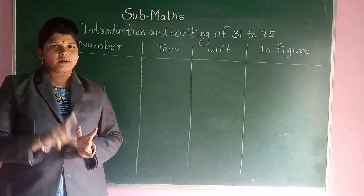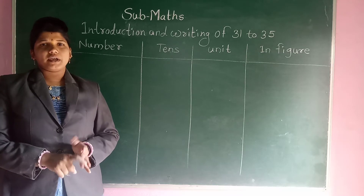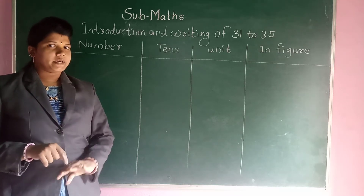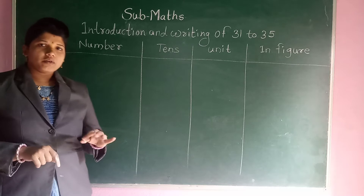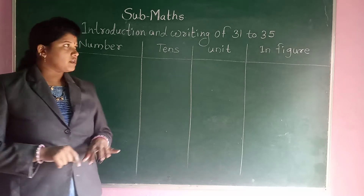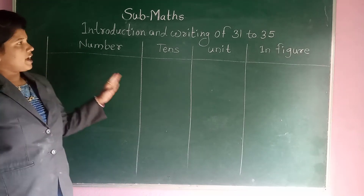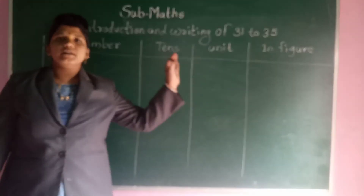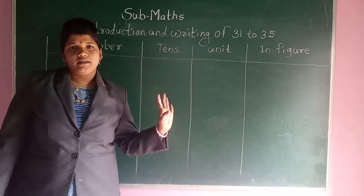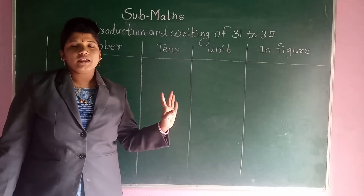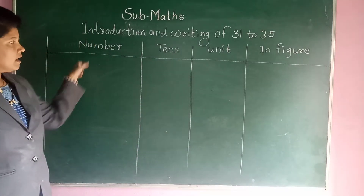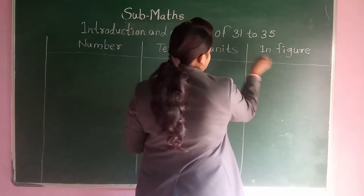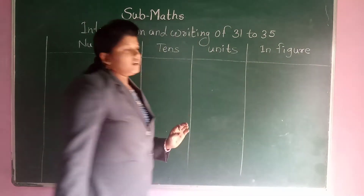Between number, missing numbers — I hope all of you better understood all concepts. So today we are going to learn the next concept: introduction and writing of 31 to 35. So first write the number, then tens and units, and next in figure.